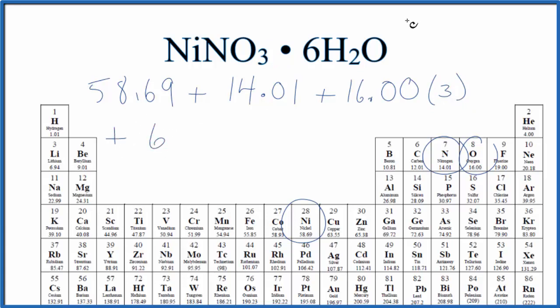We have six separate water molecules. They're around the nickel nitrate here, so we multiply that by 1.01. That's the molar mass of the hydrogen. We have two of those, plus the molar mass of oxygen. We said that was 16.00.